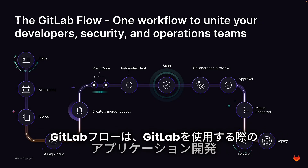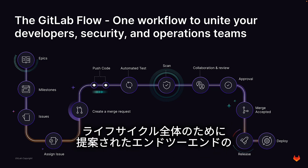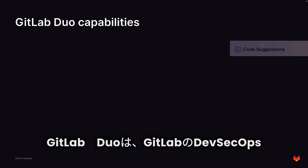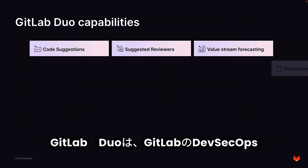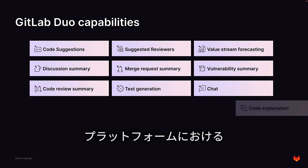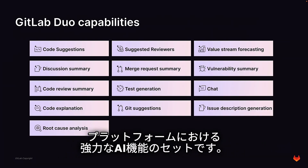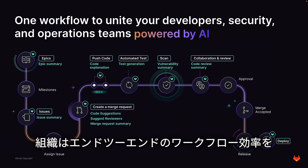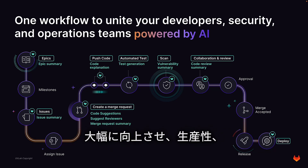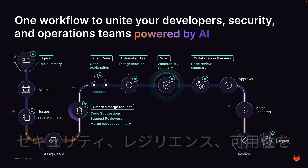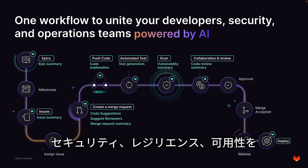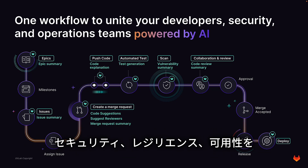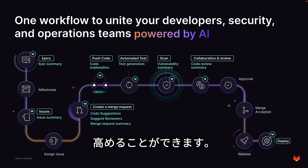GitLab Flow is a prescribed, opinionated end-to-end workflow for the development lifecycle of applications when using GitLab. GitLab Duo is a powerful set of AI-powered capabilities within the GitLab DevOps platform. Combined, GitLab Flow and GitLab Duo can help organizations achieve significant improvements in end-to-end workflow efficiency, leading to higher levels of productivity, deployment frequency, code quality, overall security, production resiliency, and availability.